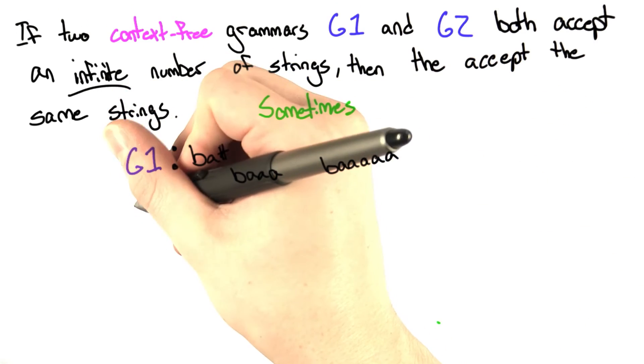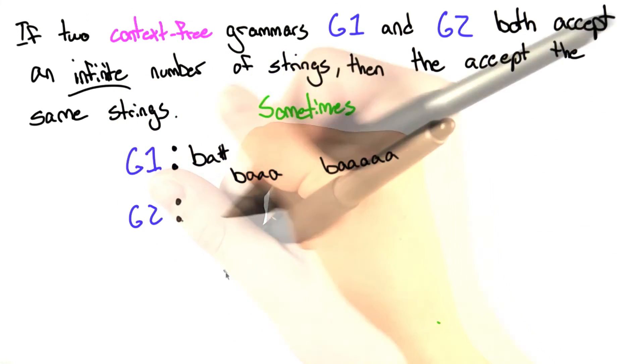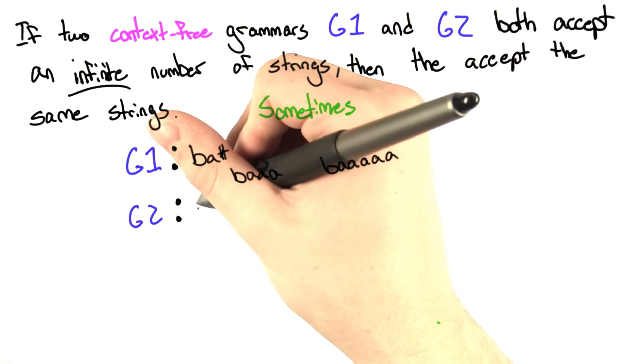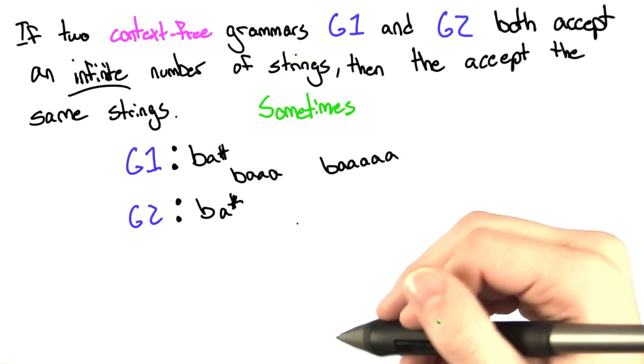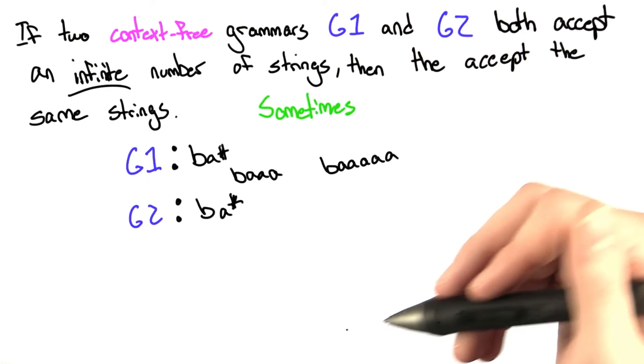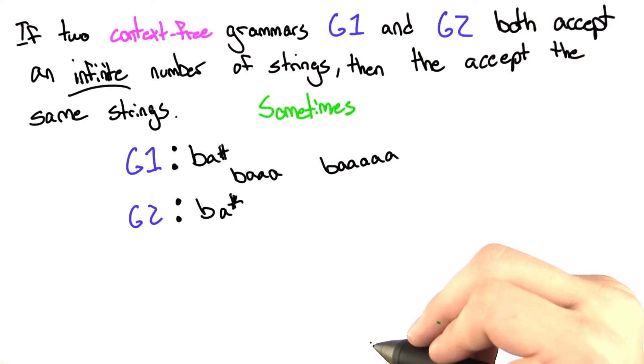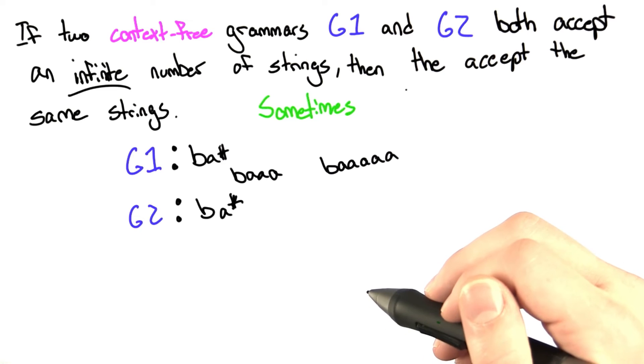Let's say we have the grammar G2. Let's make it the same exact language. I have two grammars. Both accept an infinite number of strings. They happen to be the same strings, so this statement's sometimes true. We didn't say G1 and G2 had to be unique.